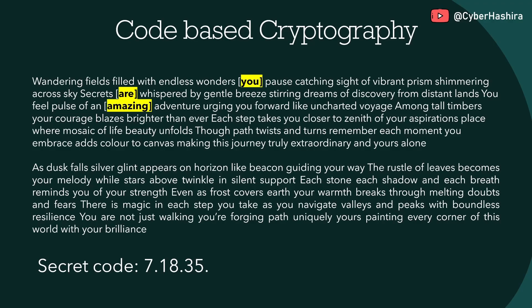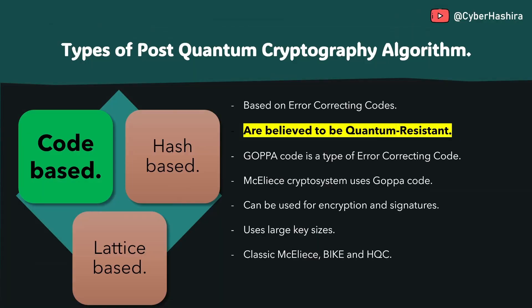You are amazing. Everything else is the noise added to the message, and 7, 18, 35 is the error-correcting code or the secret key. Obviously, it's not as simple as the example I showed you. Code-based cryptography uses a similar but a lot more complex method to secure data.